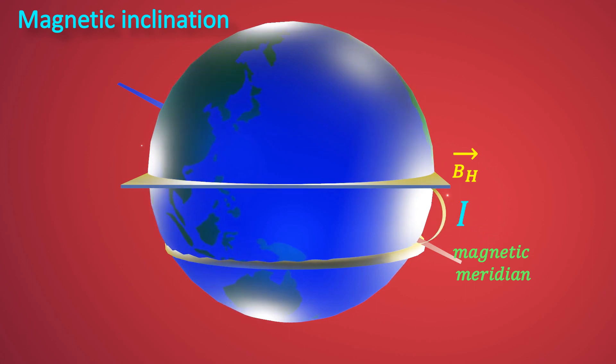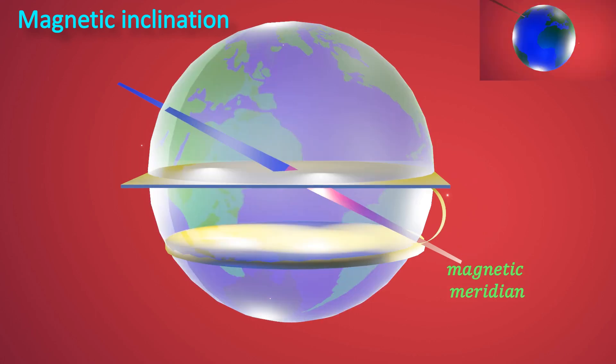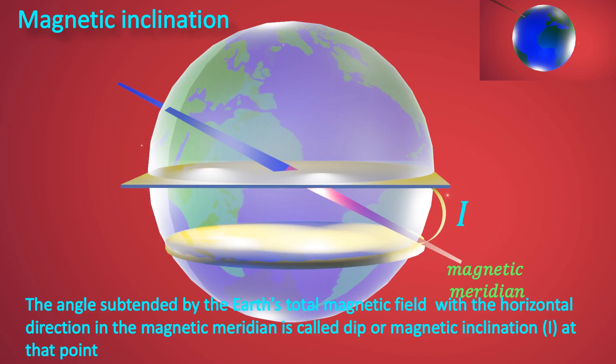The definition of magnetic inclination is: the angle subtended by Earth's total magnetic field with the horizontal direction in the magnetic meridian is called dip or magnetic inclination at that point.